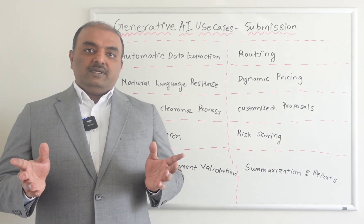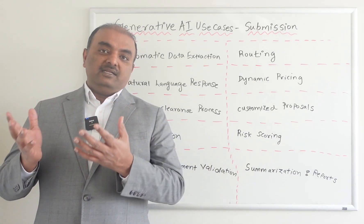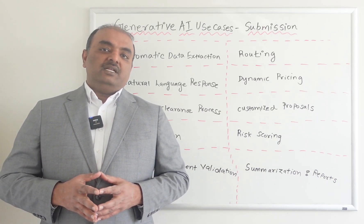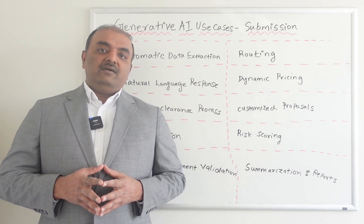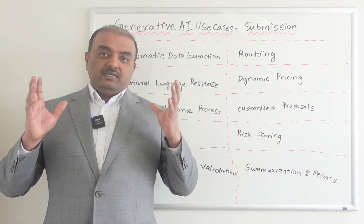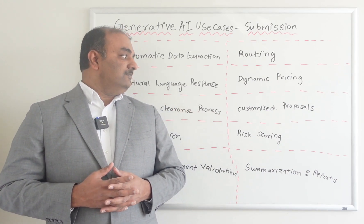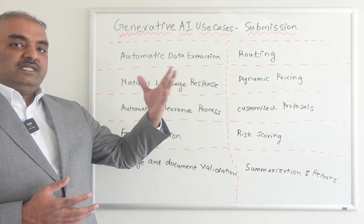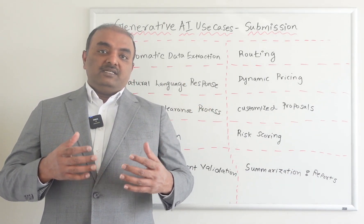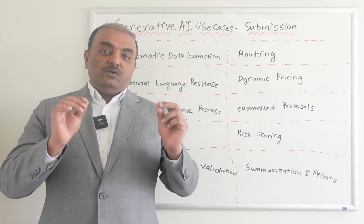Dynamic pricing. In most traditional processes, rating analysts do the rating of the submission and come up with the premium. With Generative AI, we can have models which take the submission data, generate the pricing information, and send customized proposals to the customers. Once you have the automated pricing, for each customer, Generative AI can give customized proposals which match their own risk exposure.